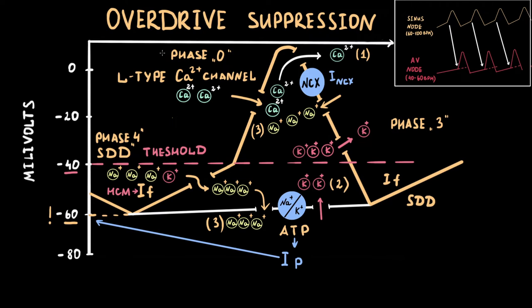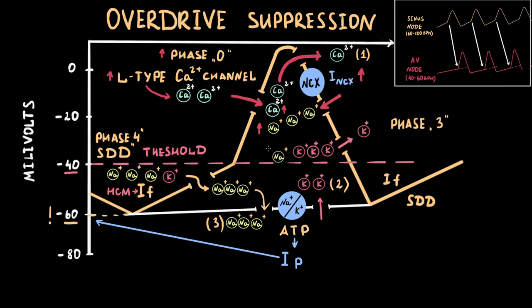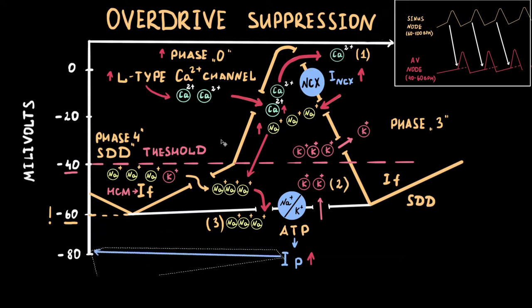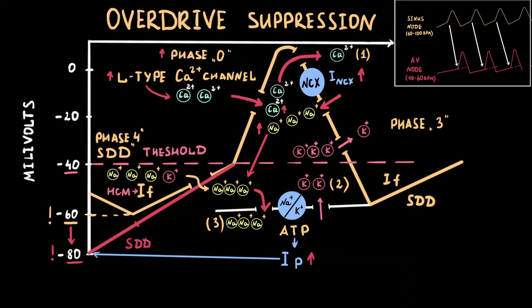This phenomenon is called overdrive suppression. Even at normal sinus rate, a latent pacemaker is driven faster than its intrinsic rate, meaning more phase zero events per unit of time. This means the cell accumulates more calcium ions per minute than it would at its own rate. This additional calcium exits via the sodium-calcium exchanger, which increases intracellular sodium concentration. That in turn increases the activity of the sodium-potassium exchanger. The sodium-potassium exchanger generates a more powerful IP current that hyperpolarizes the cell membrane and increases the maximal diastolic potential. Consequently, spontaneous diastolic depolarization needs more time to reach threshold.